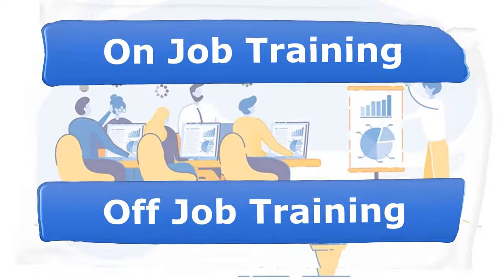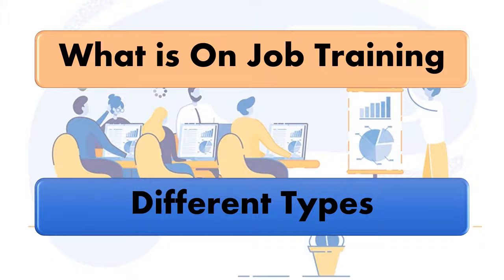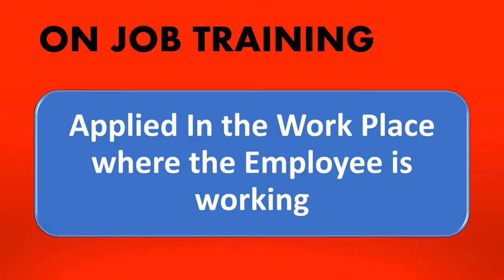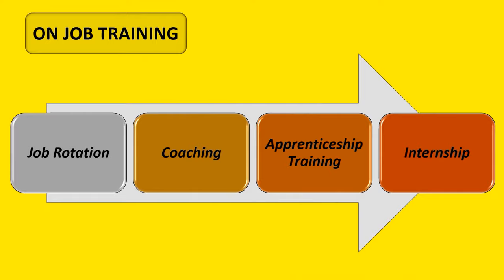First we will understand what is on-job training and the different types, and then we will discuss off-job training. On-job training is a training method that is applied in the workplace wherein the employee is actually working. There are various on-job training methods: job rotation, coaching, apprenticeship training, and internship.